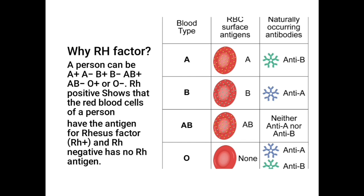Blood group O is opposite to AB. Blood group O has no antigens on the surface of red blood cells, but it has both anti-A and anti-B antibodies present in the serum.